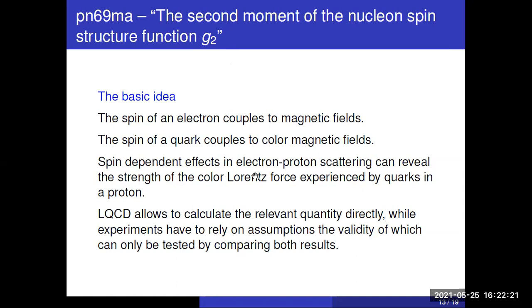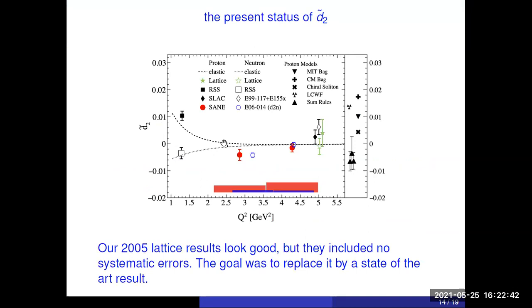However, you can do experiments only with the proton and neutron, and therefore extracting the force acting on quarks is not possible experimentally. But you can do that with lattice QCD. And you do not only get this force acting on quarks, but you get also the effects for proton and neutron, and like that you can test how good you do.